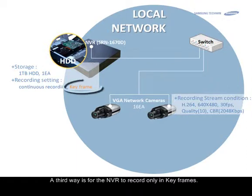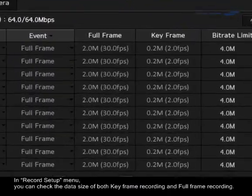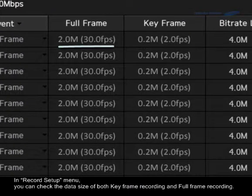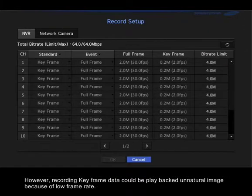A third way is for the NVR to record only in keyframes. Using keyframe recording can decrease recording data size because the NVR records fewer frames than in full frame mode. In the record setup menu, you can check the data size of both keyframe recording and full frame recording.